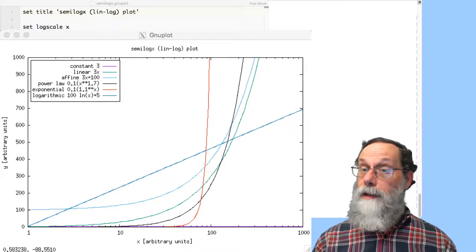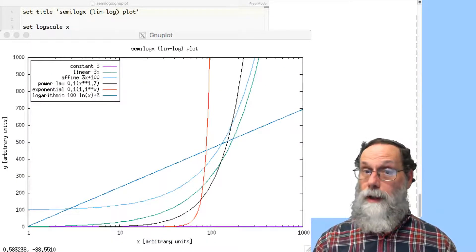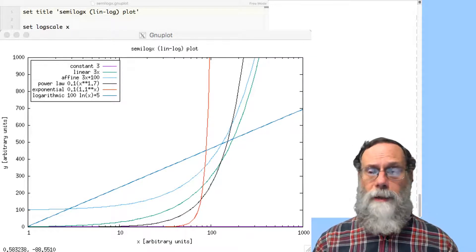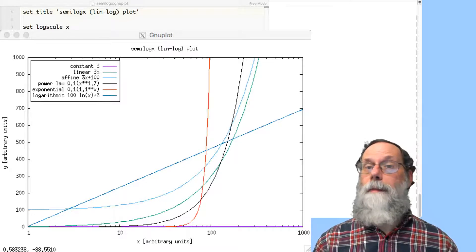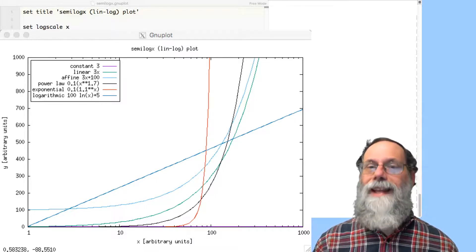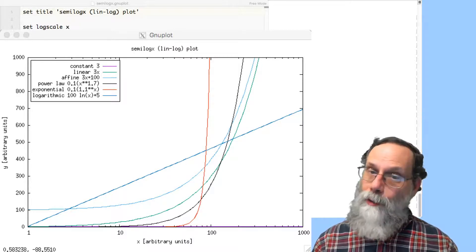We've got a straight line here, but we've only got one straight line. And that straight line corresponds to a logarithmic function. We use semi log x when we're plotting something where the y-axis should be an affine function of the logarithm of x.